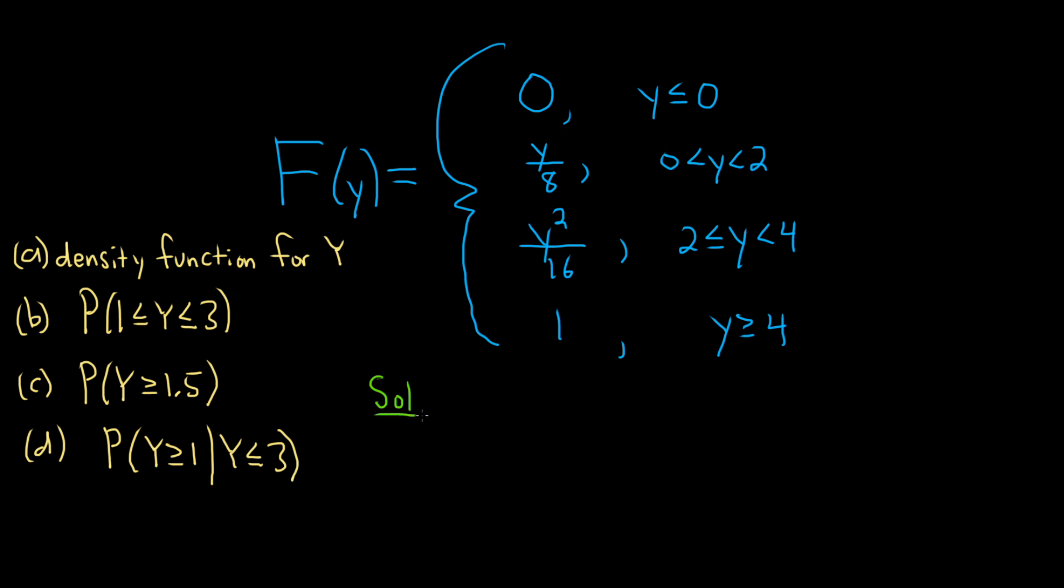So solution, part a, so little f of y is going to be equal to a piecewise function. When we differentiate zero, we're going to get zero. This piece here, we'll come back to this. When we differentiate y over eight, think of it as one over eight times y. So when you differentiate y, you get one. So we're just left with one over eight.